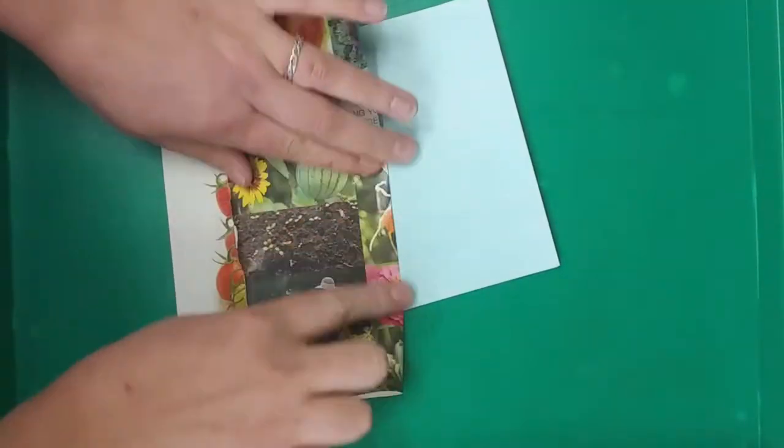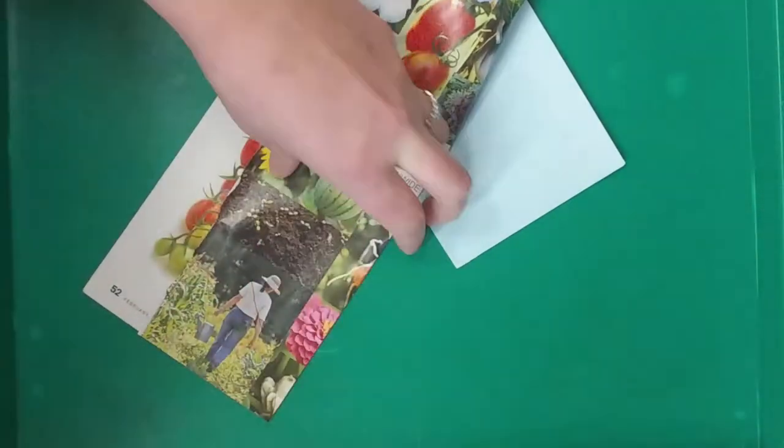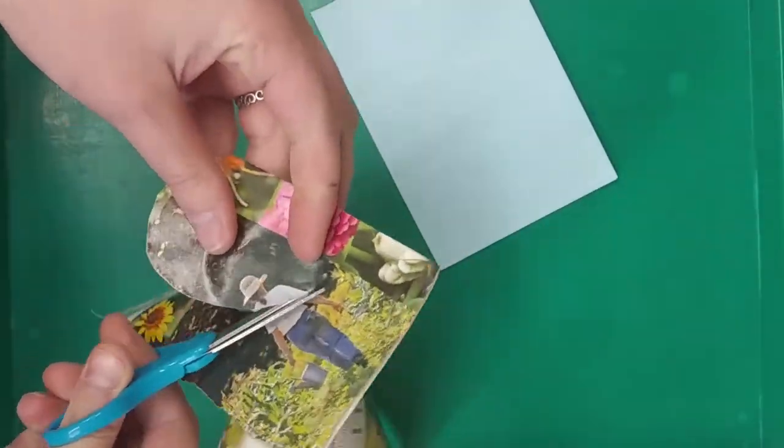Using old magazines, a flower catalog if you have one from this year, or anything that you think is beautiful, you can cut out some heart shapes to make a Valentine this year, recycled.